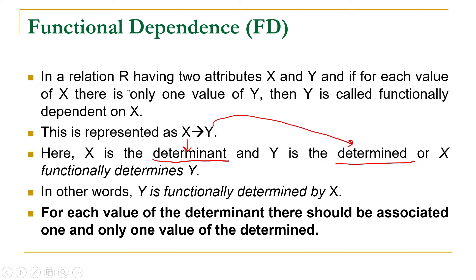We are talking about a relation R which has two attributes X and Y. In order to check functional dependence between these two attributes, we have to verify each value of X. If for each value of X there is only one value of Y, then Y is called functionally dependent on X. The important point is that for each value of the determinant X, there should be one and only one value of the determined Y.